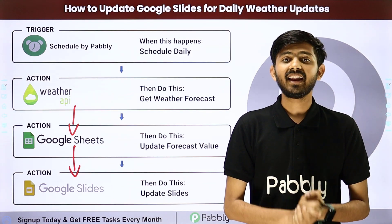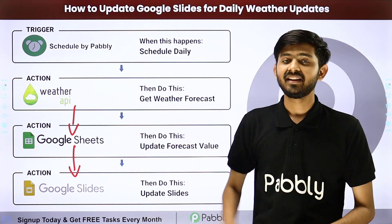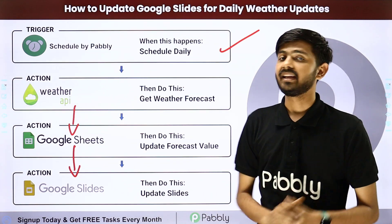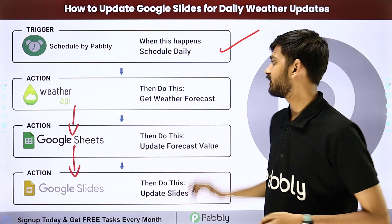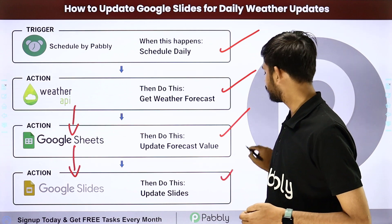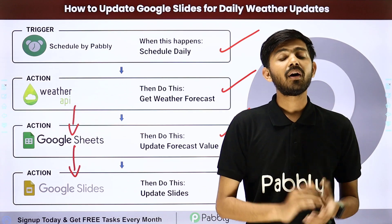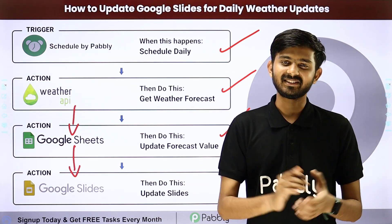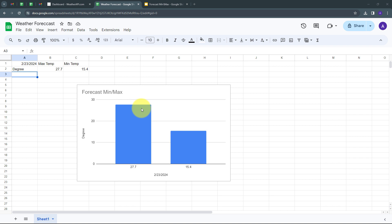In Pabbly Connect I'm going to use trigger and action. In the trigger application I'm going to use Schedule by Pabbly. In the action application I'm going to use weather API, Google Sheets, and Google Slides. Let me take you to my computer screen so you can see how we can update Google Slides for daily weather updates.